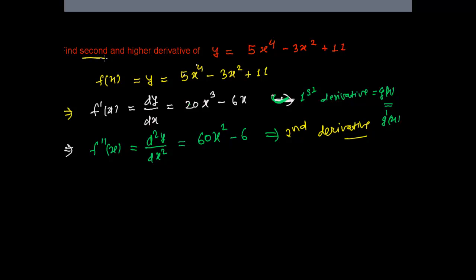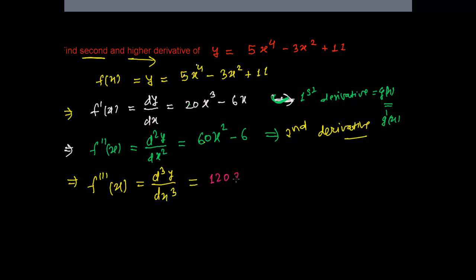Now let's find higher derivatives as well. The third derivative means three primes, or written as d cubed y over dx cubed. Taking the derivative of 60x squared minus 6: 60 times 2 is 120x, and the derivative of 6 is 0. So this is your third derivative: 120x.